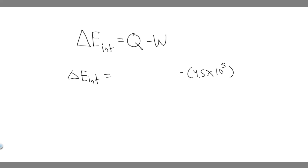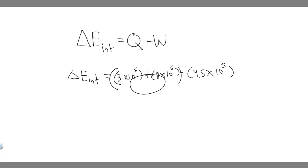For the heat term, keep in mind there are 3 times 10 to the 6 joules of heat transfer into the system and 8 times 10 to the 6 joules out. If it occurs into the system, it's positive; if it occurs out of the system, it's negative. So the 3 times 10 to the 6 is positive, and the 8 times 10 to the 6 is negative because it's leaving the system. The net Q is minus 5 times 10 to the 6.